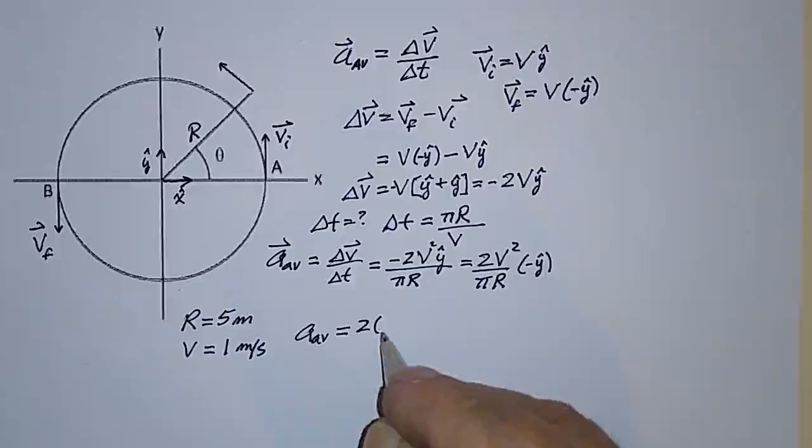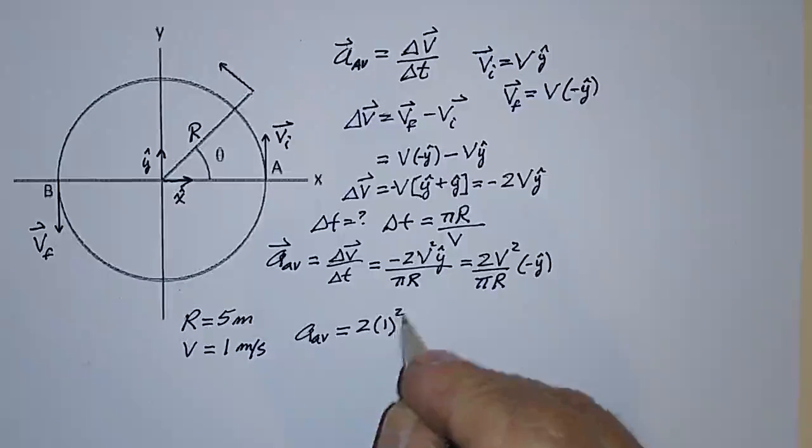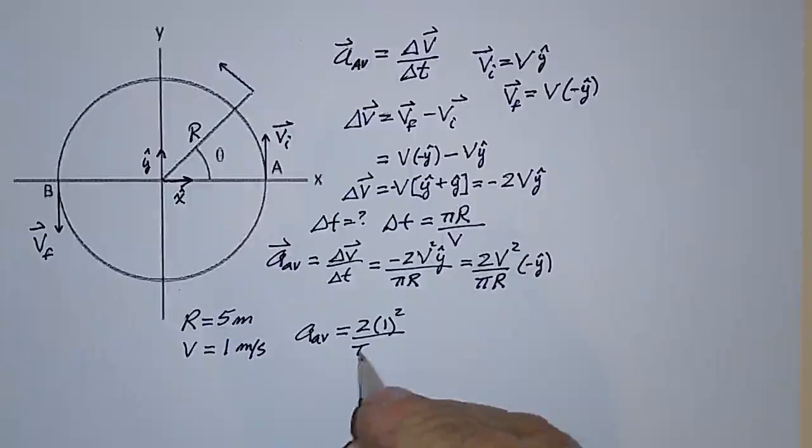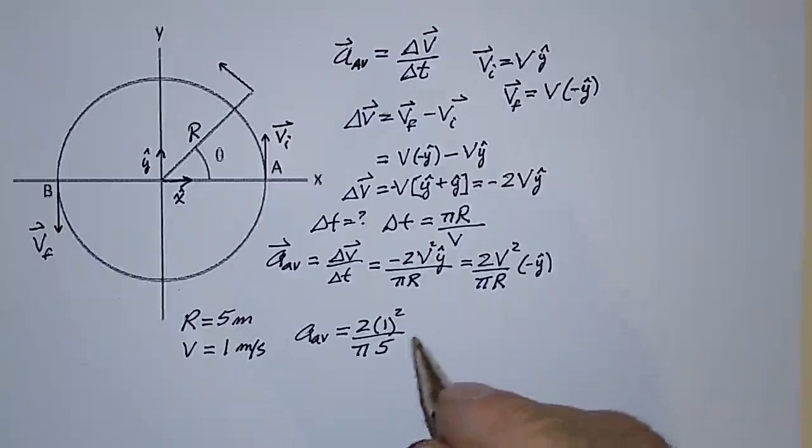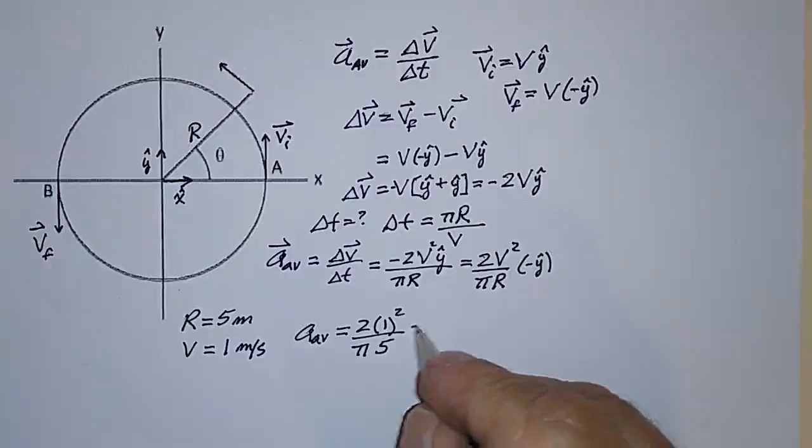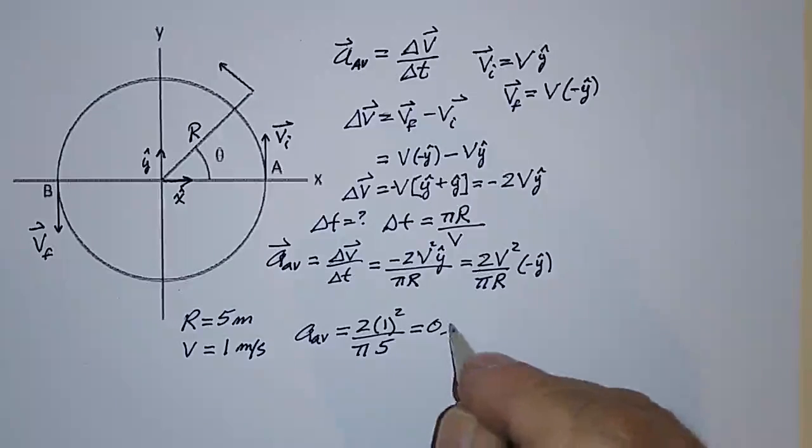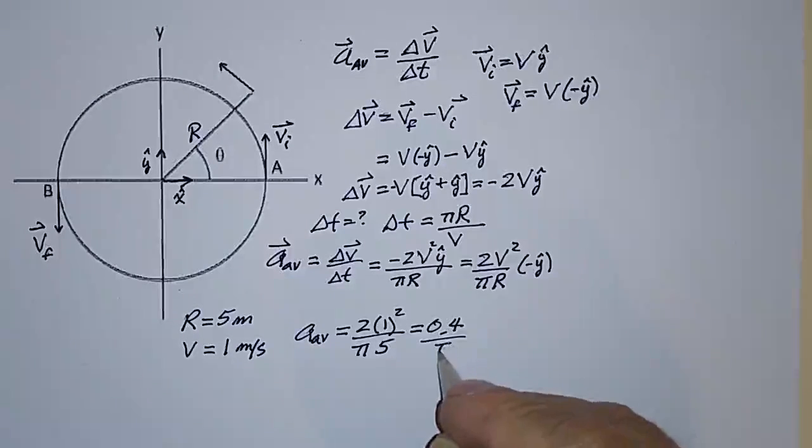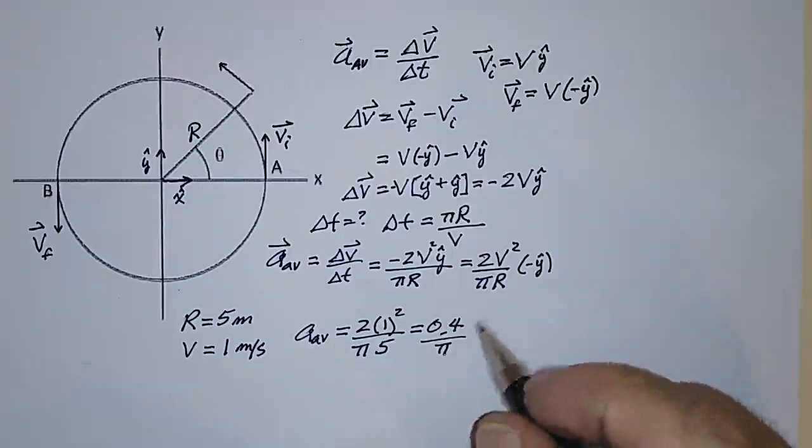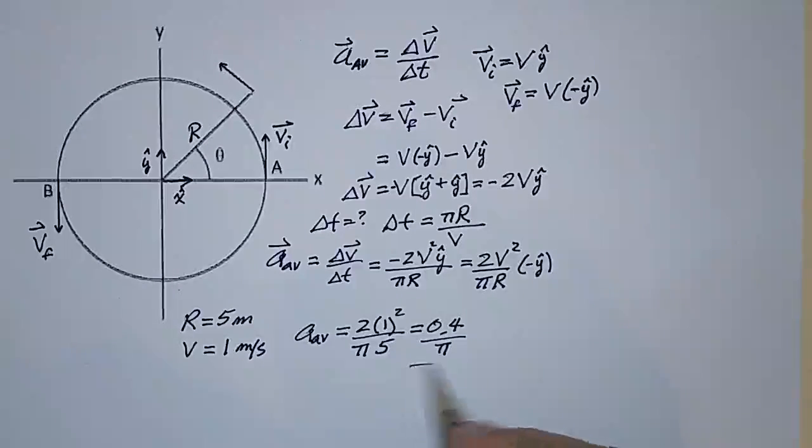equal to 2 times the speed squared divided by pi times R, which is 5 meters. So that's equal to 0.4 over pi, and that was the answer on the test.